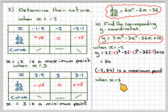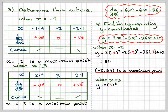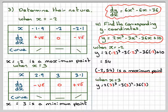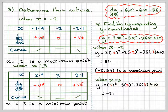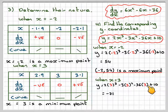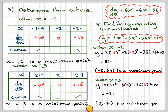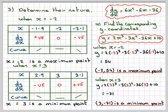Repeat for x = 3: y = 2(3)³ - 3(3)² - 36(3) + 10, which gives y = -71. Substitute carefully and put values in brackets on the calculator. Therefore we can conclude that (3, -71) is a minimum point. This is how you find turning points algebraically.